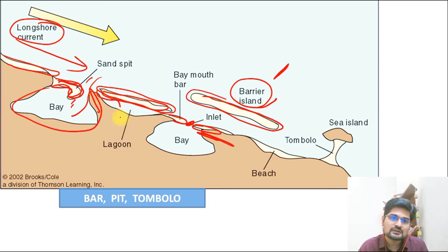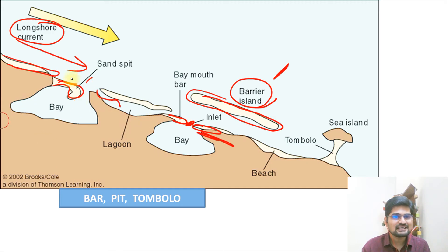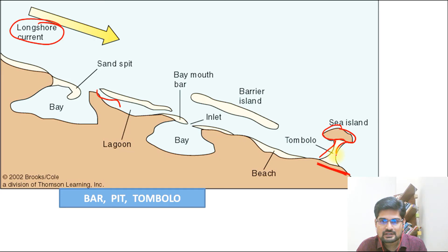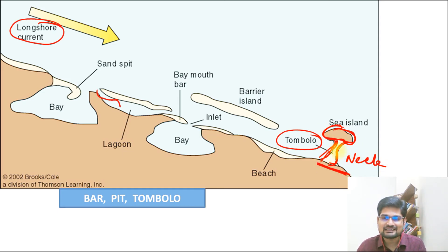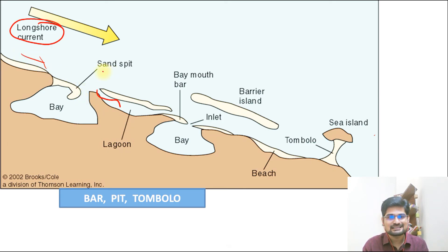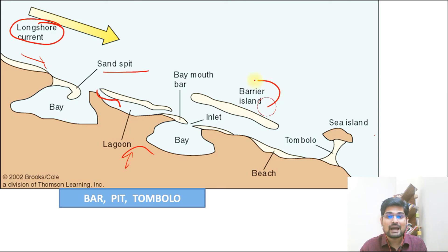If the barrier island or sand bar creates a divide with water between the land and the barrier, that enclosed water body is known as a lagoon. Another important feature is the tombolo — if there is a sea island connected to the mainland by an elongated bar, that bar is called a tombolo, resembling a neck connecting the island to the mainland. So the depositional features include longshore bars, sandspits, lagoons, barrier islands, and tombolos.